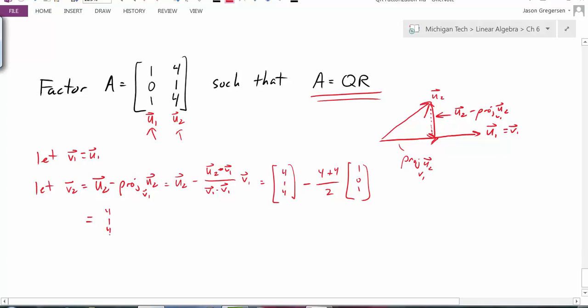So I have 4, 1, 4, that vector minus the vector 4, 0, 4. So this simplifies to 0, 1, 0. So this should be my V2 vector.